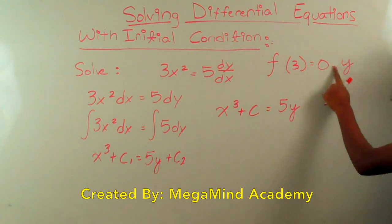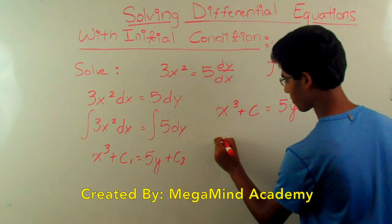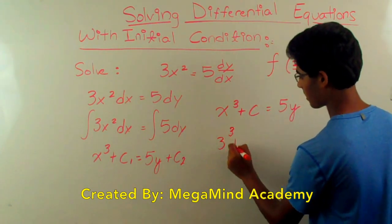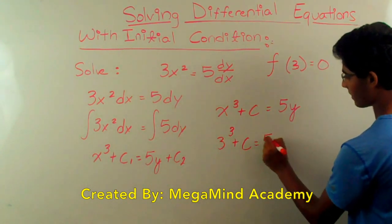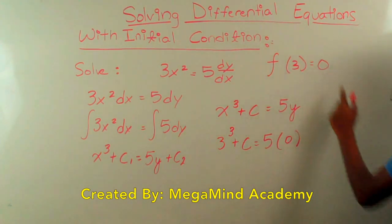So anyways, we have to plug in our values. We know that 3 is x, so we get 3 cubed plus c is equal to 5 times y, or f of 3, which is 0.